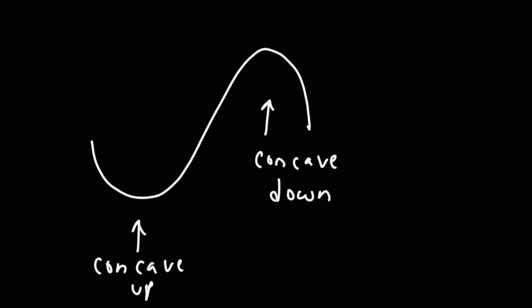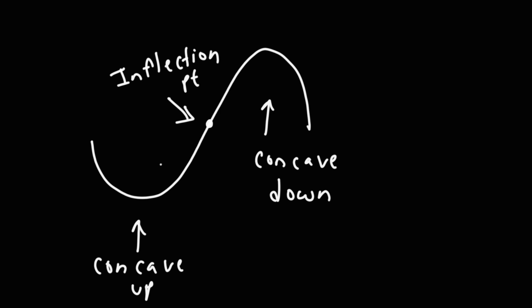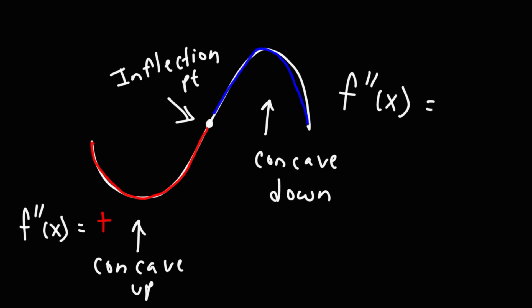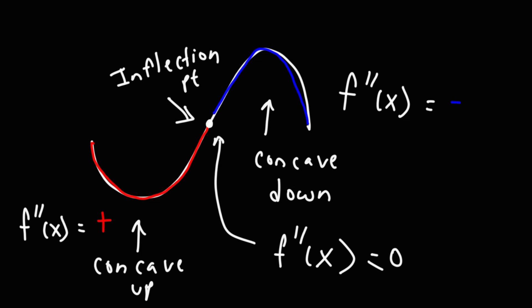At some point the concavity changes from up to down — that's going to be the midpoint between the local minimum and the local maximum. When the concavity changes, that is the inflection point. The second derivative is positive where it's concave up, and negative where it's concave down. When the second derivative changes from positive to negative it has to cross zero, so at the inflection point the second derivative is equal to zero. That's how you find the inflection point.